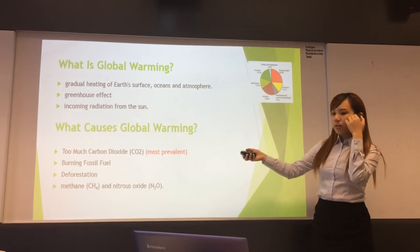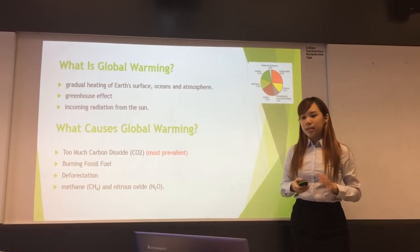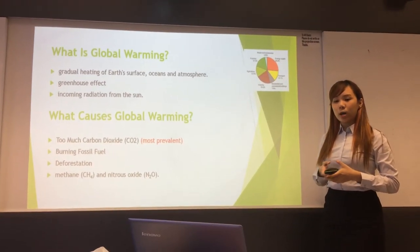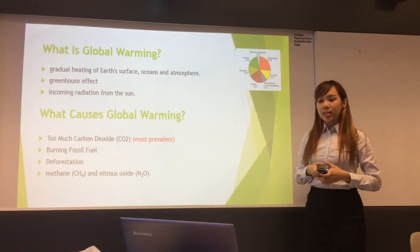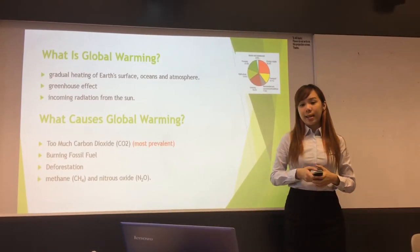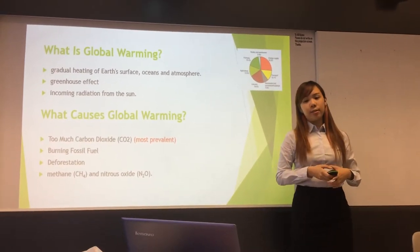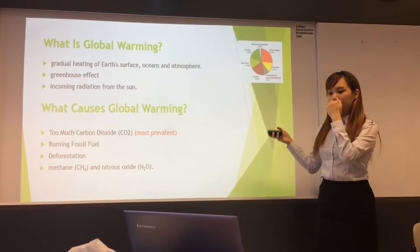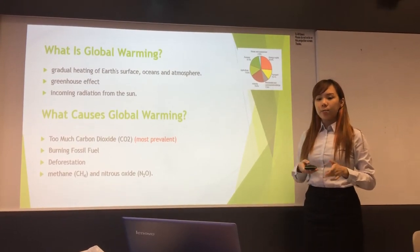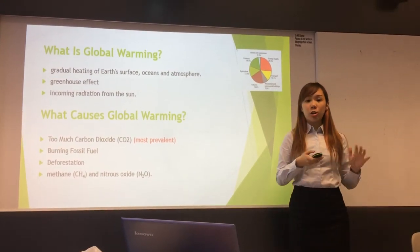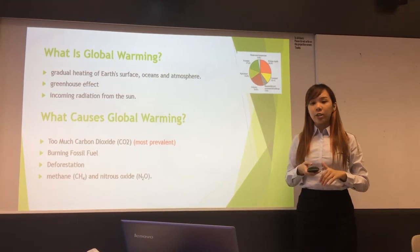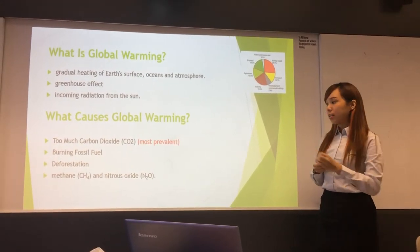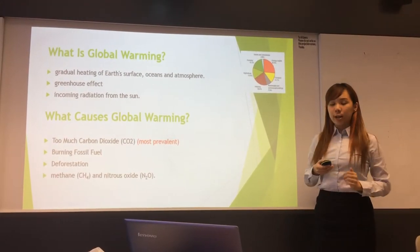So what is methane and nitrous oxide? Methane is emitted from natural sources such as wetlands, as well as human activities such as leakage from natural gas systems and the raising of livestock. Methane's lifetime in the atmosphere is much shorter than carbon dioxide, but it is more efficient at trapping radiation compared to carbon dioxide.